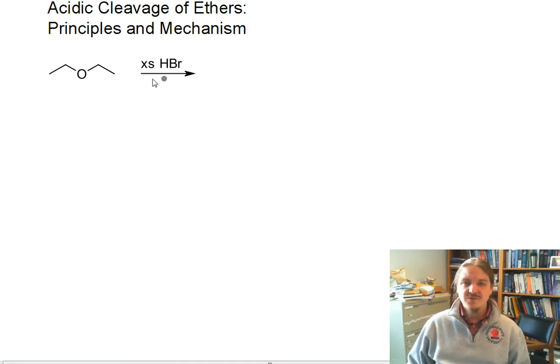So the way that this reaction works: you have an ether, and I'm going to use diethyl ether as my example. Initially I'm going to talk about excess hydrogen bromide, and this reaction produces two equivalents of bromoethane as its products.